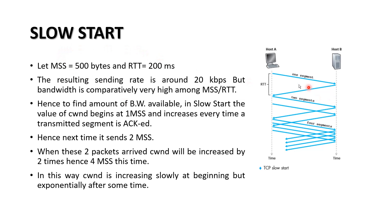In slow start, it first increases the data rate by sending only one MSS (maximum segment size). After one ACK is received, it doubles the sending rate. As you can see, when one acknowledgement is received, it increases by one MSS, so next time two packets are sent. After receiving acknowledgements for those two, it increases by two MSS — in this way the rate doubles each time.